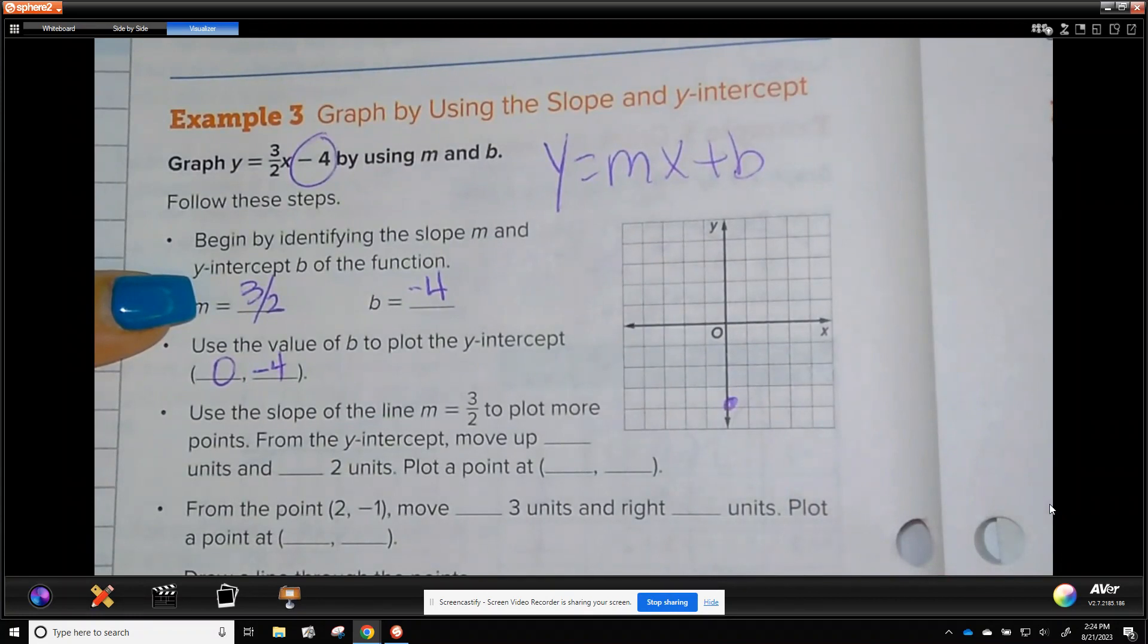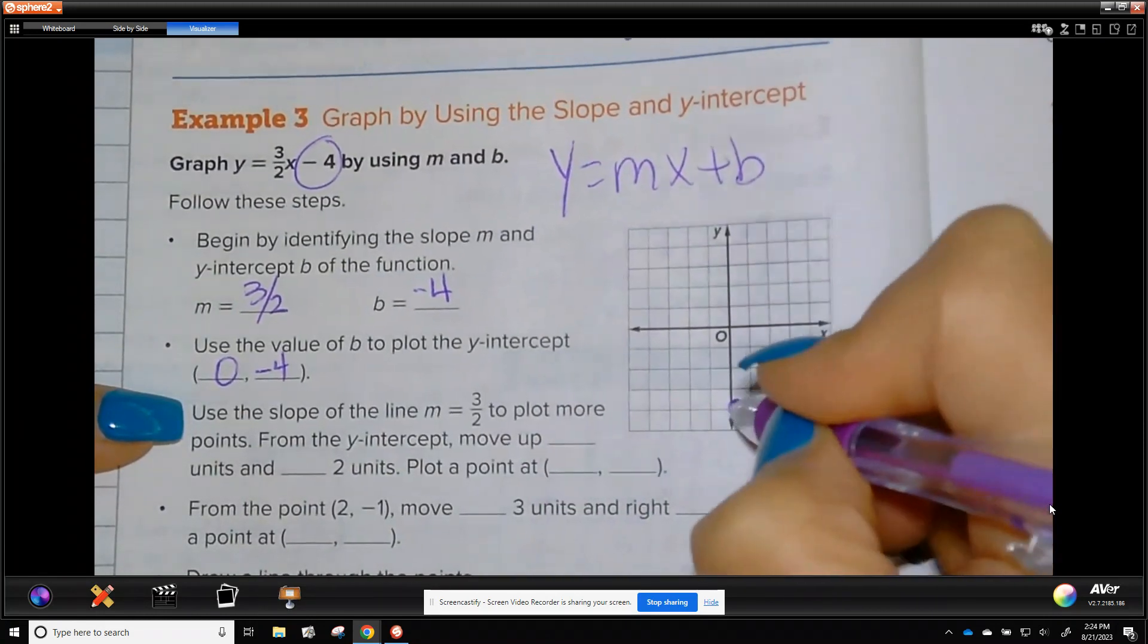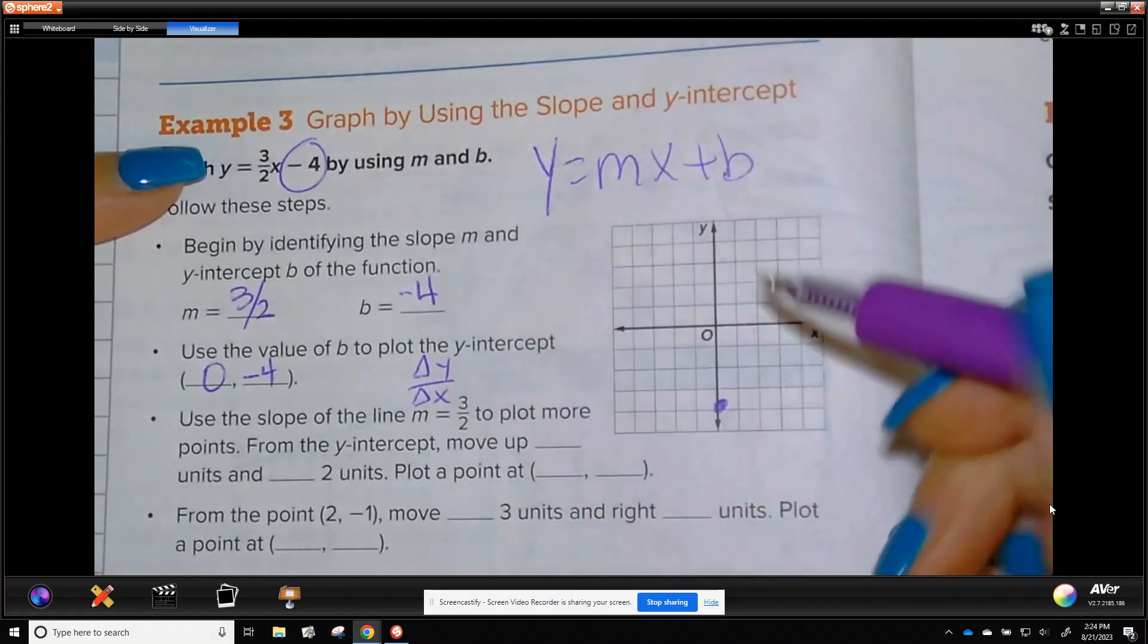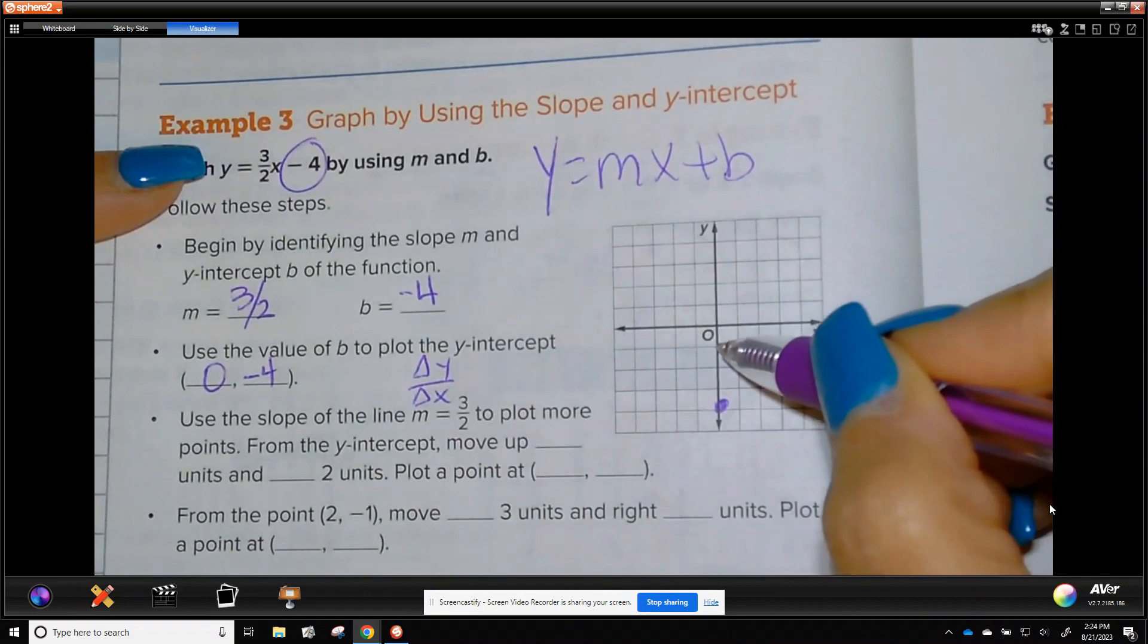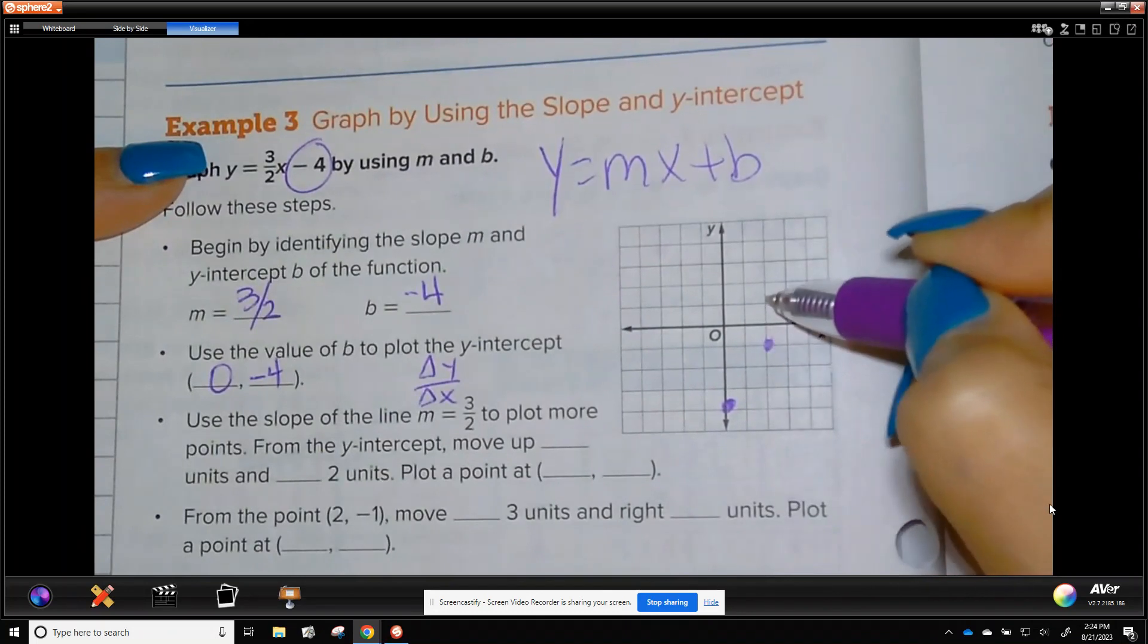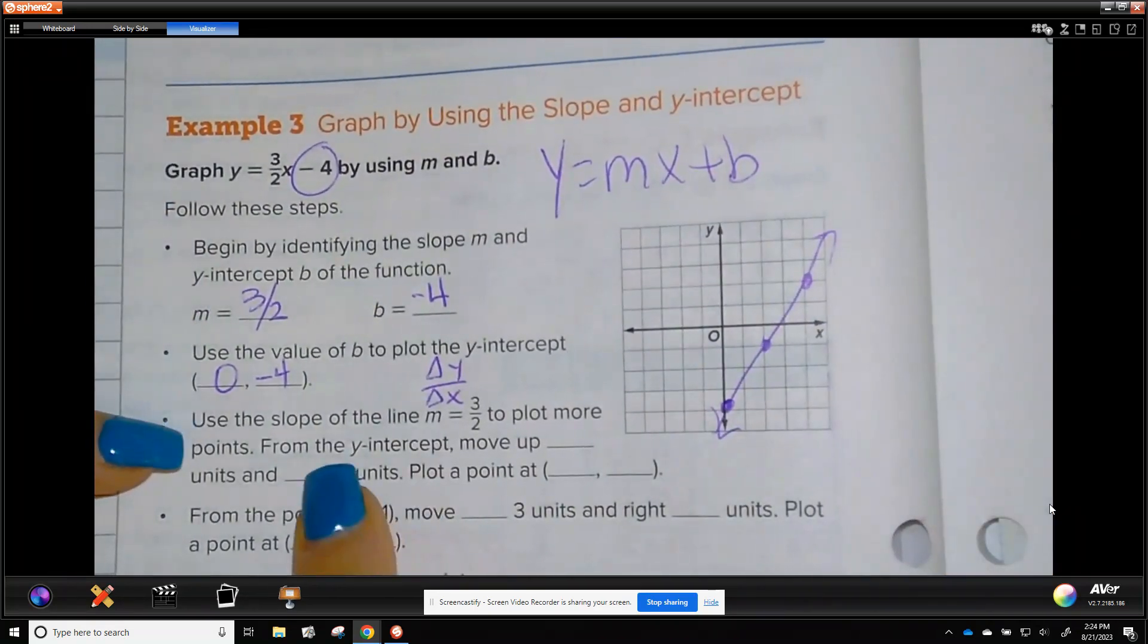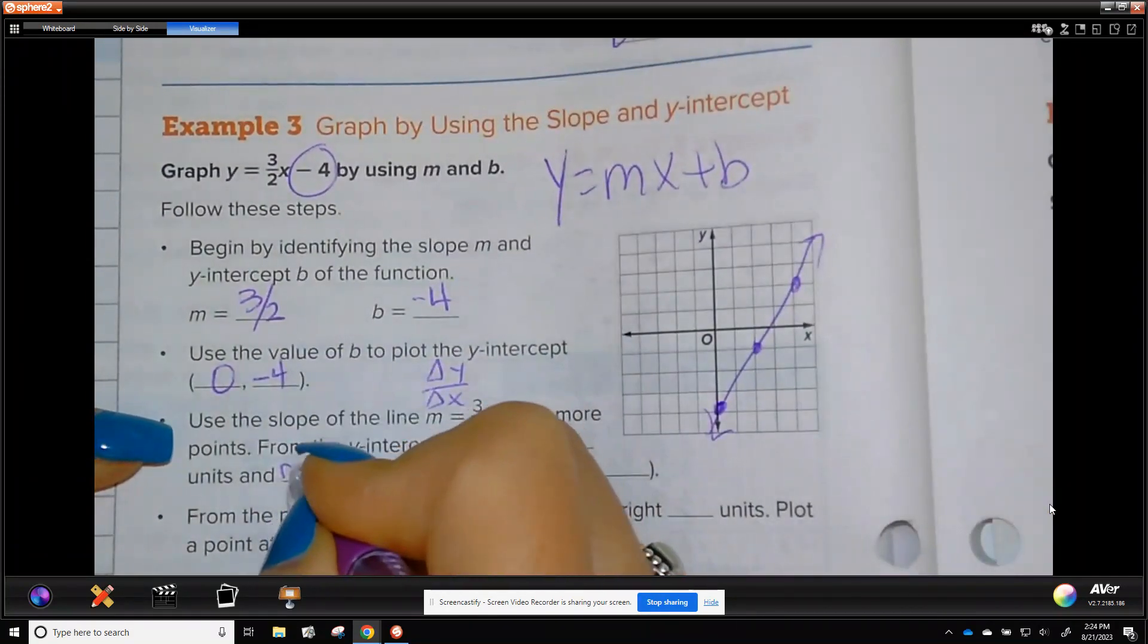Put a dot. That's where you begin on the b. And then a slope of positive 3 halves. Remember, we have to do the change of y over the change in x. So we're going to change y, 3, positive 3, 1, 2, 3 up. And change x to positive, which is 2 to the right. Put a dot. 1, 2, 3, 1, 2. So I was able to put two other points. And draw your line.